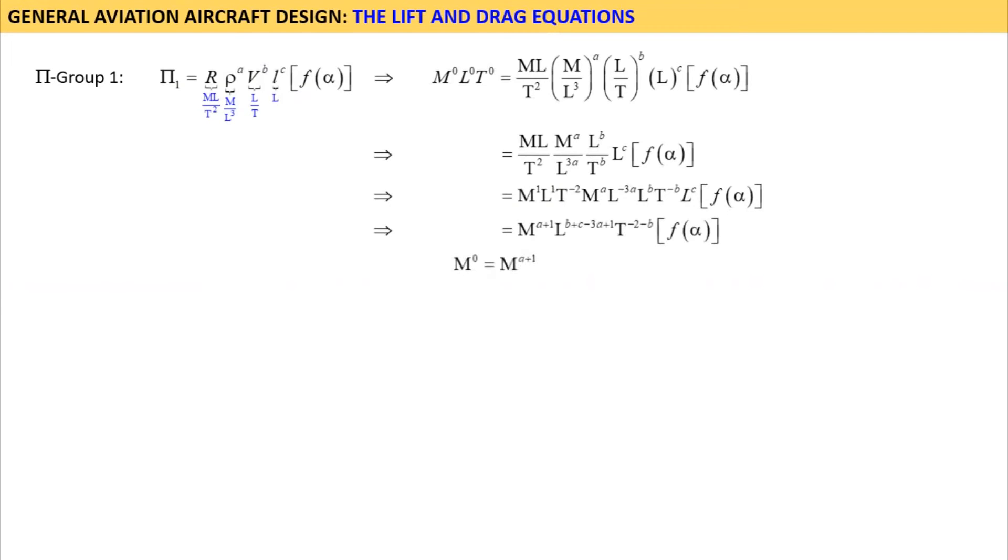Now let's solve for the powers. In order for M to have a power of zero, requires that zero is equal to A plus 1. For L to have a power of zero, requires that zero is equal to B plus C minus 3A plus 1. And for T to have a power of zero, requires that zero is equal to minus 2 minus B. The top condition is easily solved. Zero is equal to A plus 1. Therefore, A must equal minus 1. By inspection, we see that we must solve for A and B before we can determine C in the center condition.